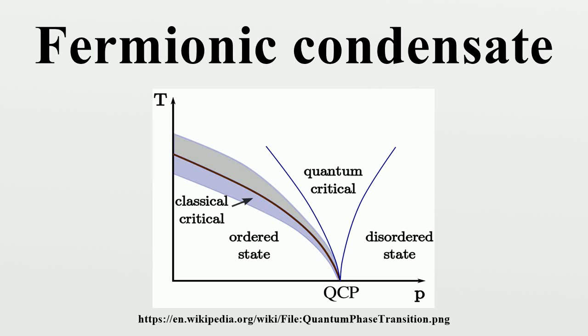A fermionic condensate is a superfluid phase formed by fermionic particles at low temperatures. It is closely related to the Bose-Einstein condensate, a superfluid phase formed by bosonic atoms under similar conditions.